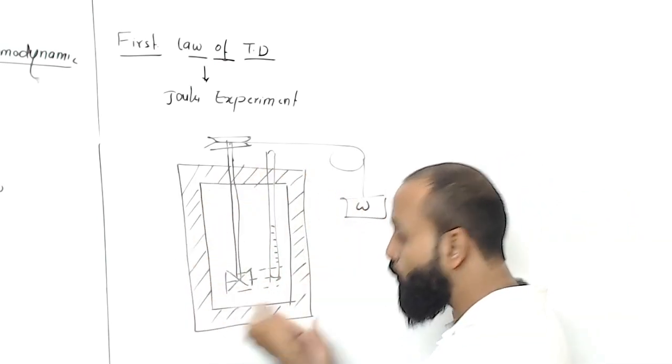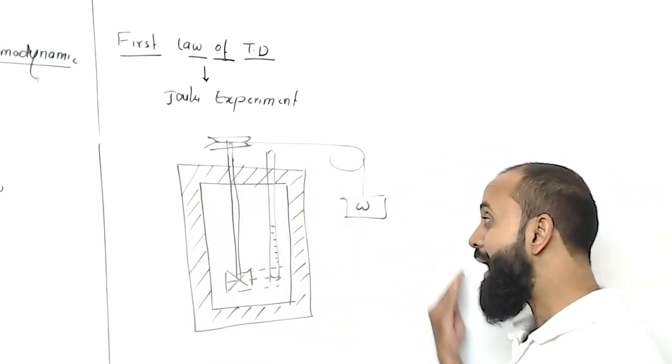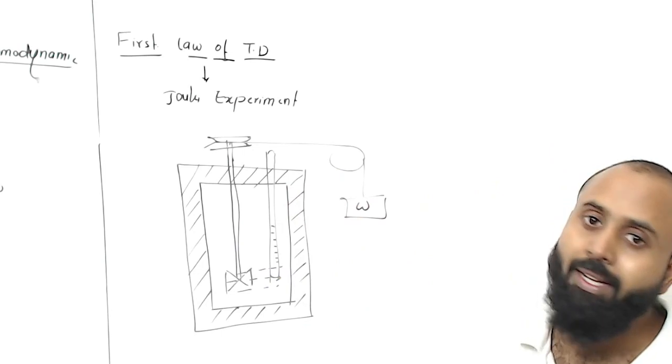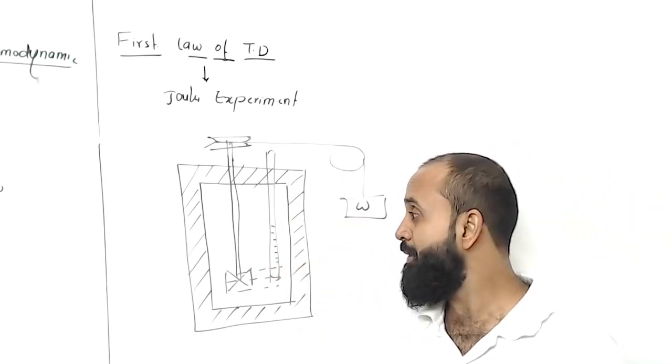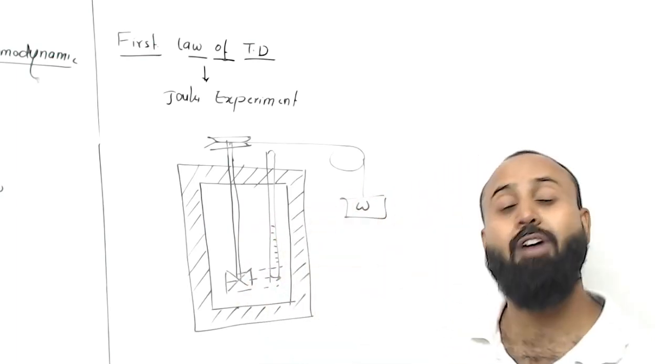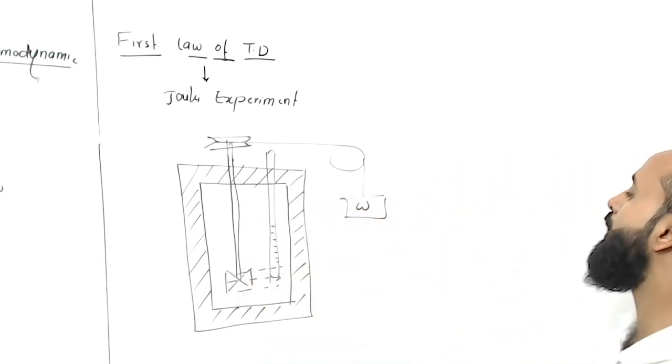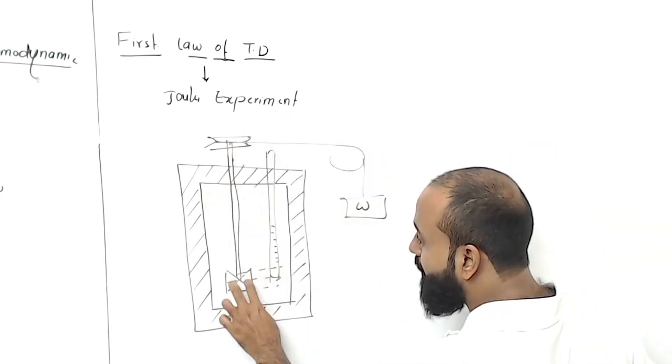Basically, since you have insulated it from outside, heat cannot come in from outside. The heat must have been generated inside. So what source was there to generate heat? Joule concluded that the work transferred through the stirrer got converted into heat.